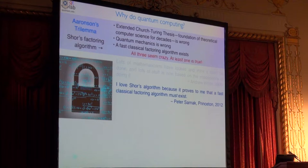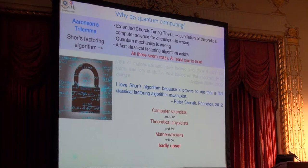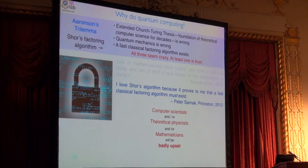All three of those things seem crazy to computer scientists, theoretical physicists, mathematicians, but at least one of them must be true. So, it's win-win for an experimentalist because it doesn't matter what you do, you're going to upset somebody. Okay. And the second half of this talk will be how we experimentally test this trilemma.